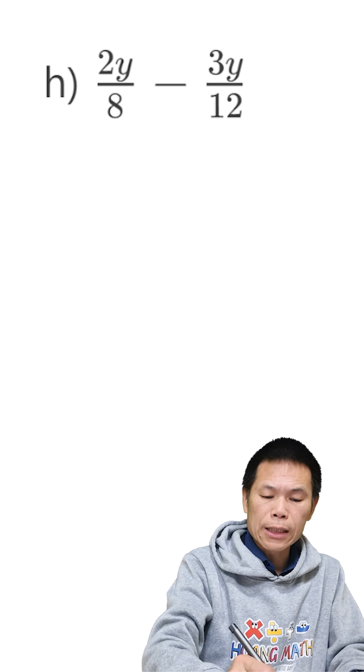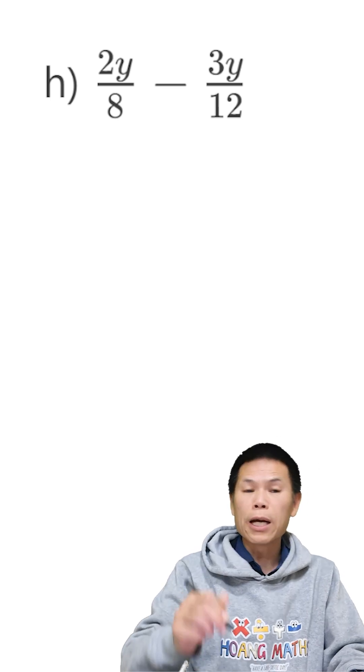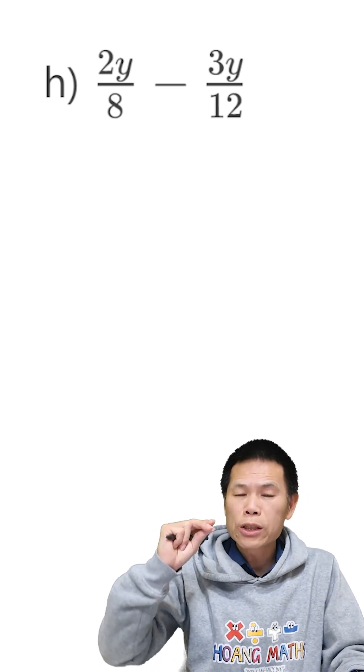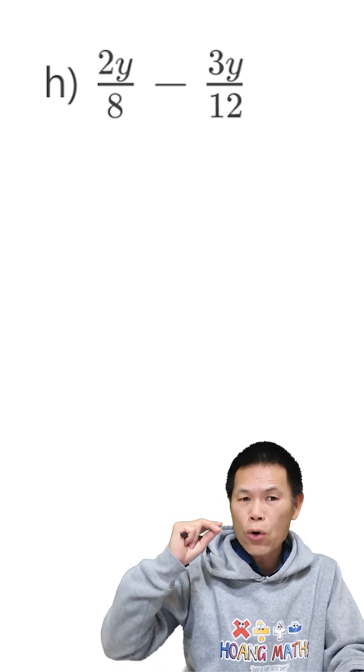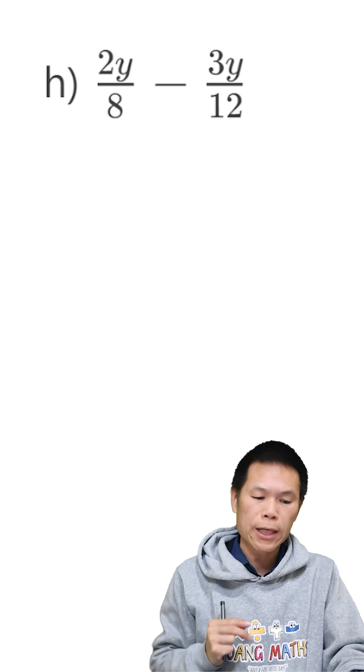So if I list like this, 12, next one is 24. We stop here. So 24 is the lowest common multiple of 8 and 12. In other words, 24 is the lowest common denominator.